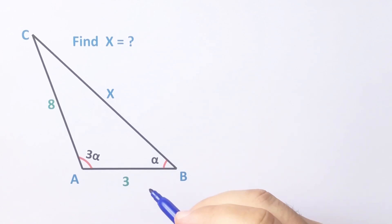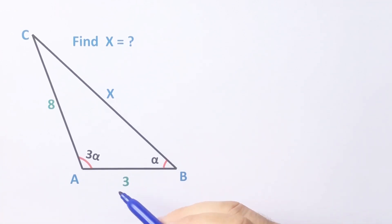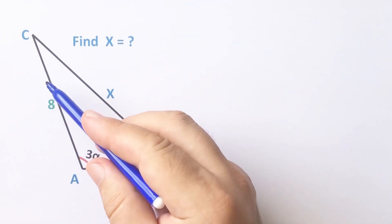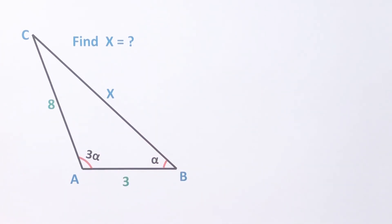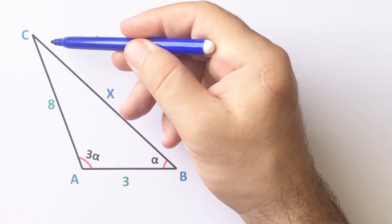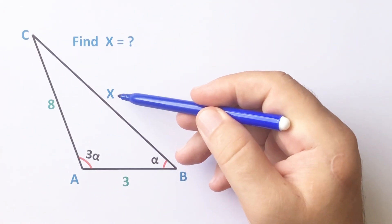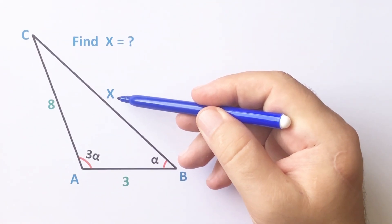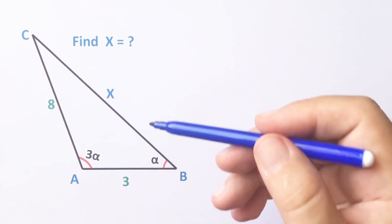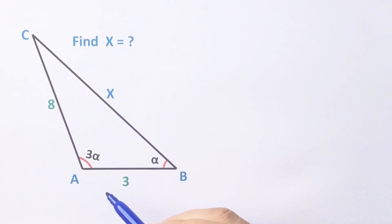Hello everyone. In this video we have one triangle with sides three and eight. This angle is alpha and here is three alpha, and we will calculate the value of x.